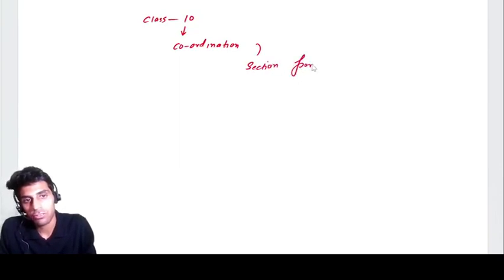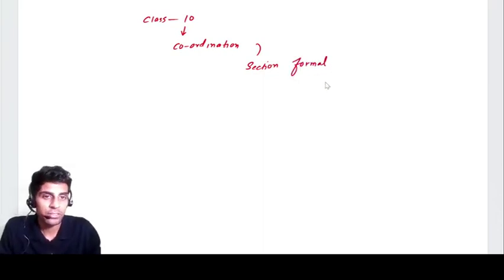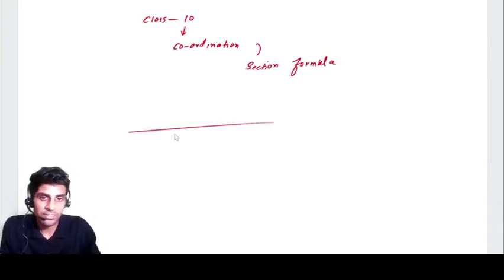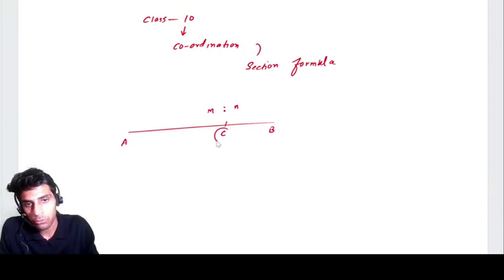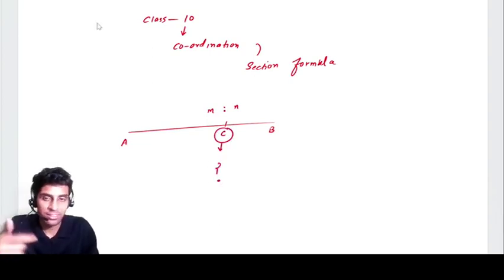What is the use of the section formula? The use of the section formula is to find the coordinate of a point which is dividing a particular line. Let me explain it to you very easily. For example, if there is a line AB and if this line is divided by any point C in some ratio m ratio n, and I want to know the coordinate of point C, how can I find it?